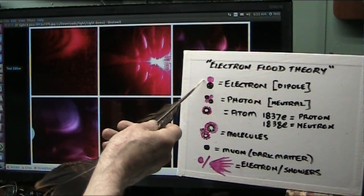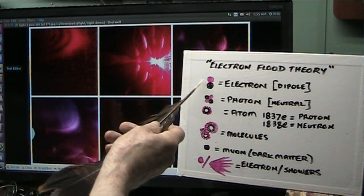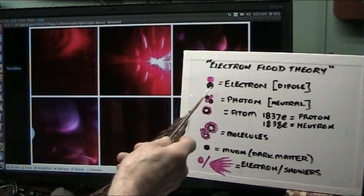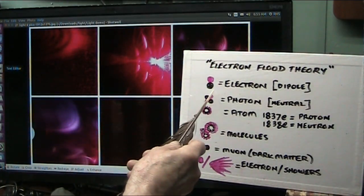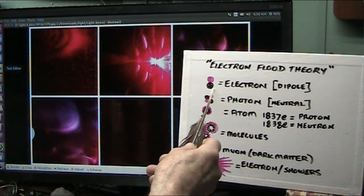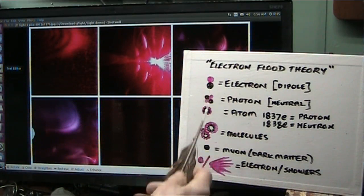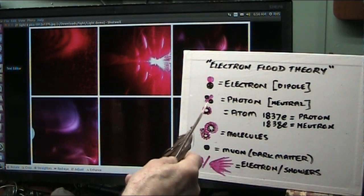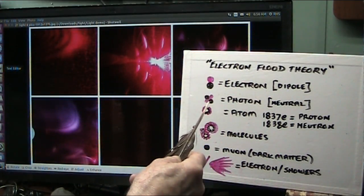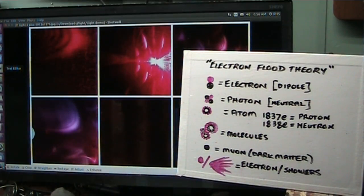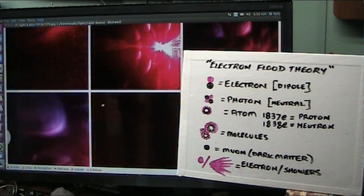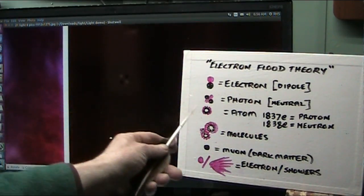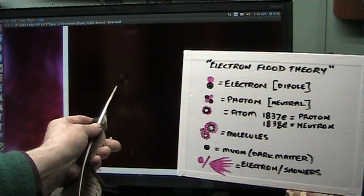This causes electron showers, and the muon side causes nothing — it just stays in a black ball. When you add an electron back to back, you make a photon. That's what the photon looks like.